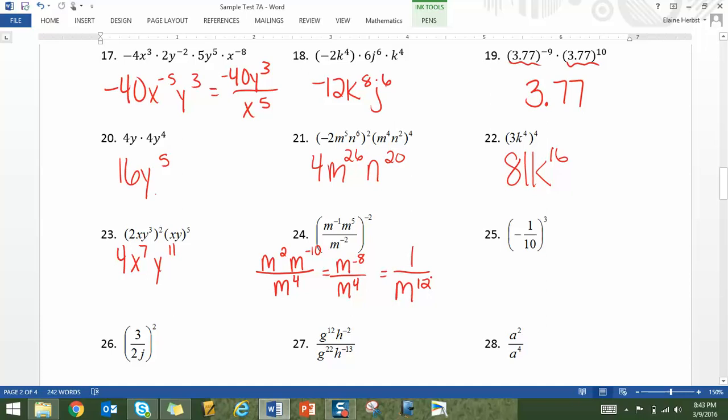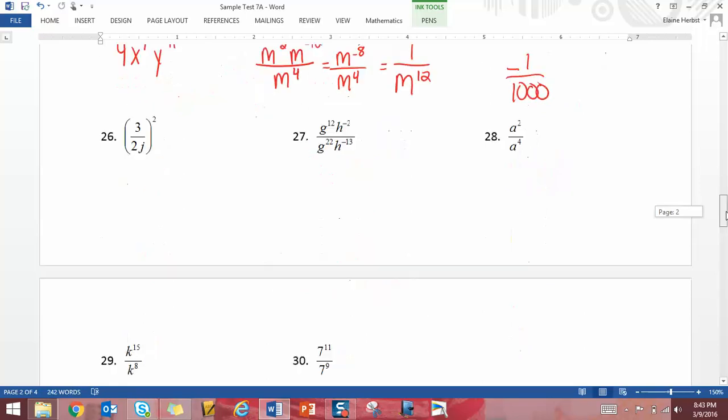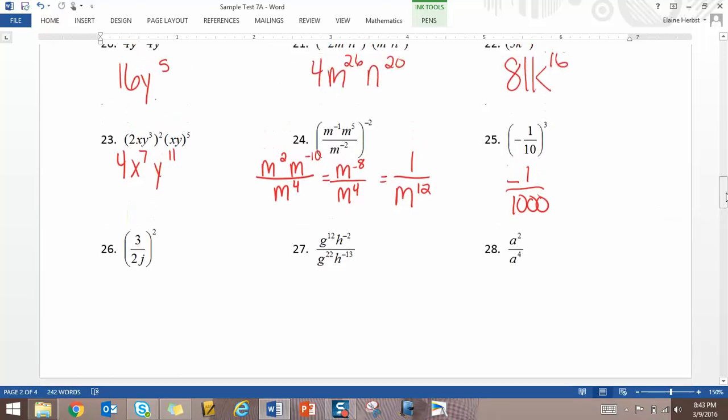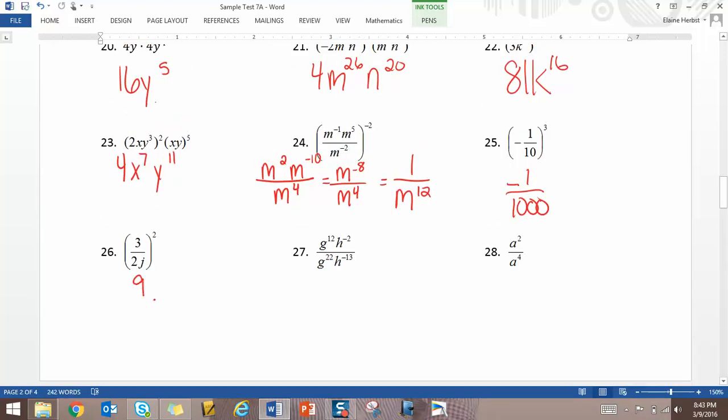25 is negative 1 over 1,000. 26, you're going to have 9 over 4j squared.